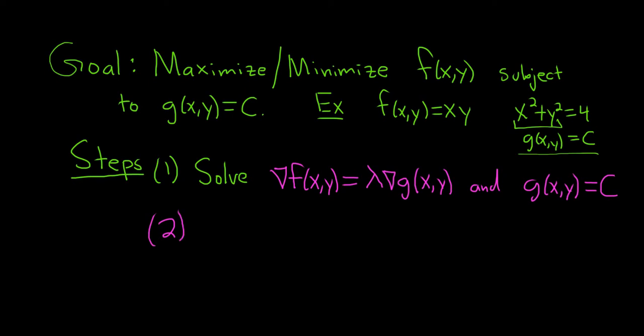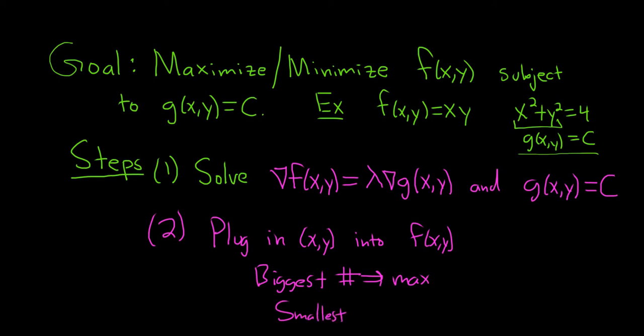Step two: once you get your answer or answers from the first part, you plug them into your original function. So plug in x, y into f of x, y. The biggest answer you get is the max, the smallest is the min. So the biggest number you get, that's your maximum. And the smallest number you get, that's your minimum.